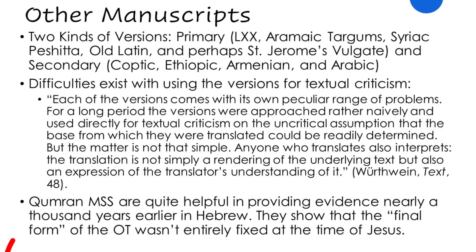That said, the translations — called 'versions' in textual criticism — are distinguished into two kinds: primary versions and secondary versions. The primary versions include the Septuagint in Greek, the Aramaic Targums, the Syriac Peshitta, the Old Latin, and St. Jerome's Vulgate. Secondary versions are translations based off one of the other translations. These different translations are especially helpful when the Hebrew is uncertain, can be interpreted in multiple ways, or when the Hebrew text is corrupted.